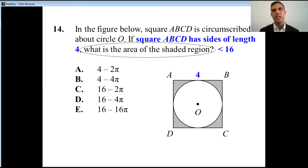Take a look at answer choice E. 16 minus 16π. Well, that's 16 minus 16 times about 3. That's negative 32. Negative 32, negative 8, negative 2. They're all gone. Right away, we could be down to C and D.